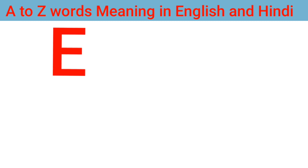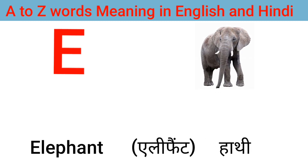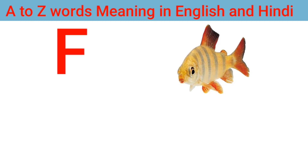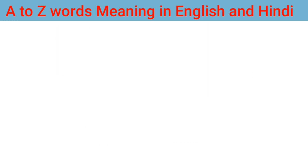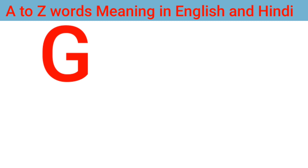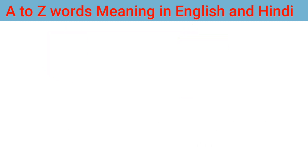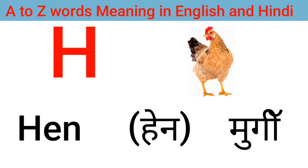E for elephant, elephant means hathi. F for fish, fish means machli. G for grapes, grapes means anggur. H for hen, hen means murgi.